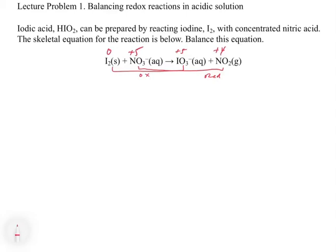Step 2 is to split the equation into half reactions. We have I2 going to IO3 minus, and NO3 minus going to NO2. Now, one thing you want to do is balance all atoms except O and H first. The nitrogens are already balanced, so that's easy. But for iodine, we have two on the left and only one on the right, so we put a 2 in front of IO3 minus.